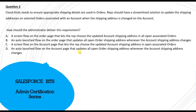Option D is an auto-launched flow on the account page that updates all open order shipping addresses whenever the account shipping address changes. As per the question, whenever the account shipping address changes, we need a streamlined process to update the shipping address on all open orders associated with that account — without rep intervention. The question doesn't say the rep needs to make any changes, so D is the right answer.